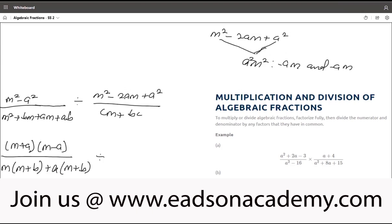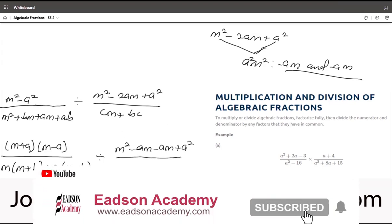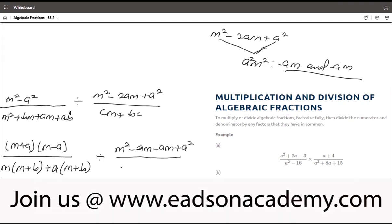Then I'm going to replace this middle term with these factors. So this becomes m square minus am minus am plus a square over—here, if I group it, c is common. So I have c into m plus b.